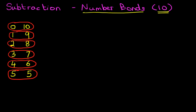Now, we can use this grid also when we are doing number bonds to 10 in subtraction. So, let's have a look at our first example.